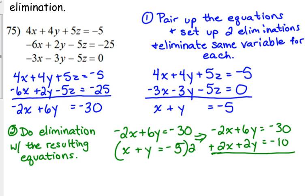Add for elimination. The x's eliminate. We get 8y. Negative 30 plus negative 10 is negative 40. So when we solve for y by dividing by 8, we get negative 5.